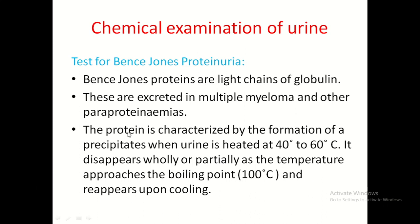Special protein test: Bence Jones proteinuria. These Bence Jones proteins are light chains of globulins, excreted in case of multiple myeloma and some paraproteinaemias. The protein is characterized by forming a precipitate when urine is heated at 40–60°C, which disappears or partially dissolves as temperature approaches boiling point (100°C), and on cooling the precipitate reappears.